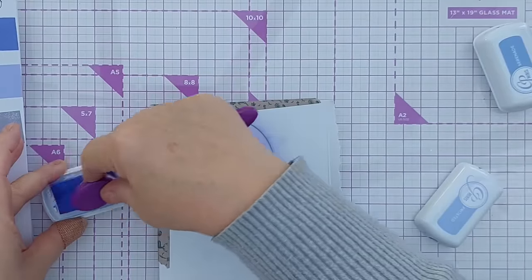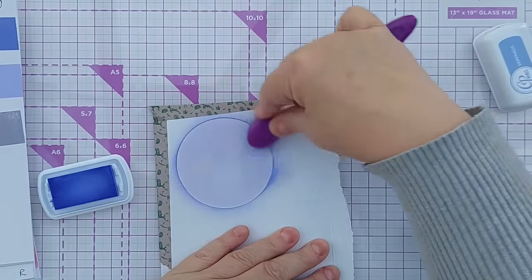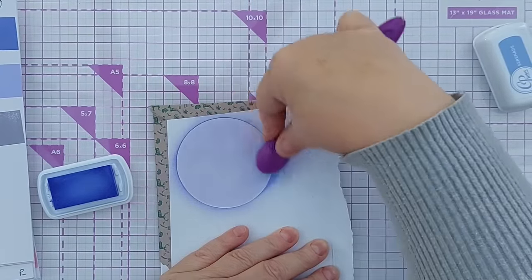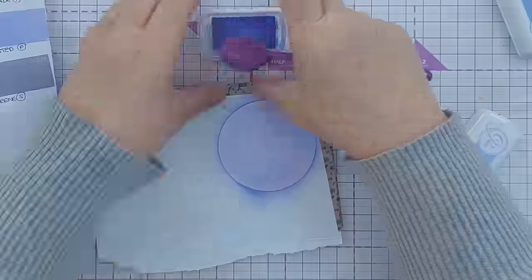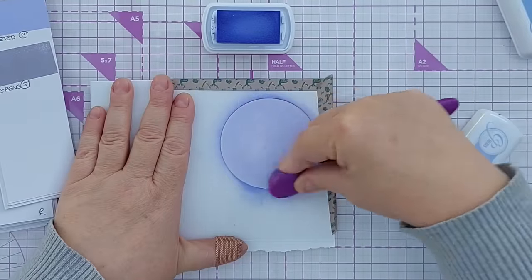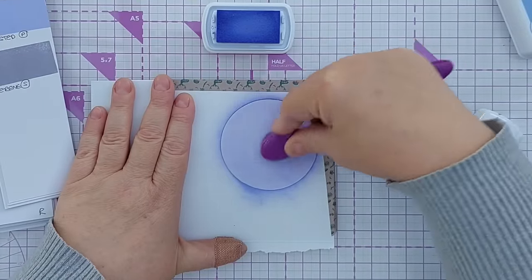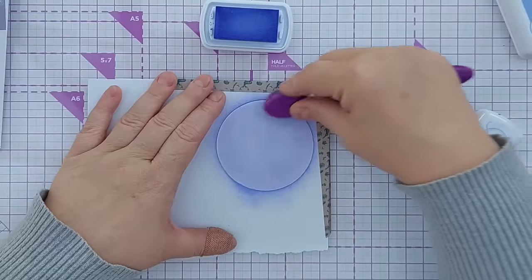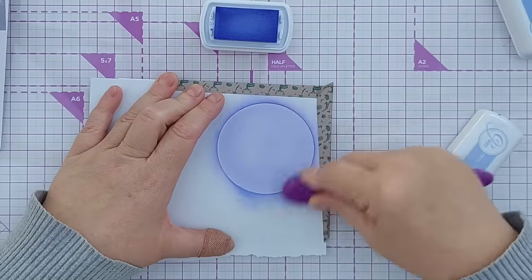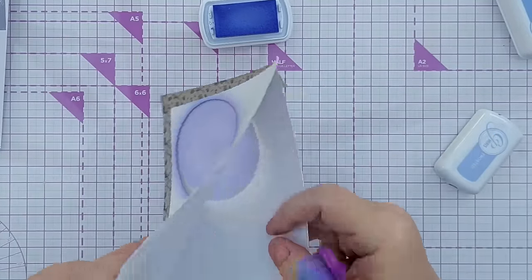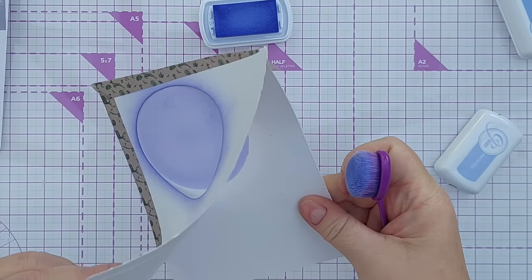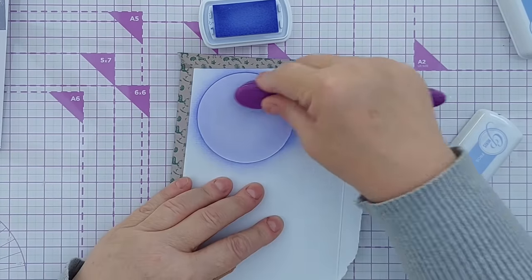So I find with these Catherine Pooler inks it's a good idea to just try and build up the color gradually when blending and then they tend to smooth out better. I think that's a fairly even coat and if I have a little peek in there I can see that that has colored it nicely.